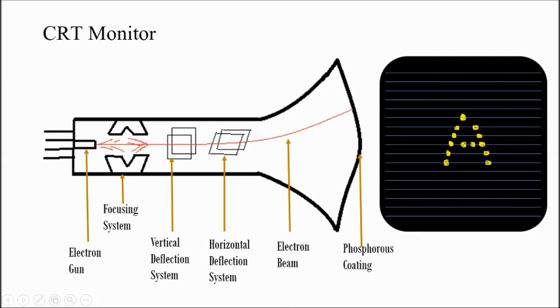There is an electron gun, then focusing system, vertical deflection system, horizontal deflection system, electron beam and phosphorus coating. In CRT monitors the electron gun emits electrons towards the monitor and the focusing system focuses or converges the electrons into a beam which will produce a bright spot on the phosphorus coating.